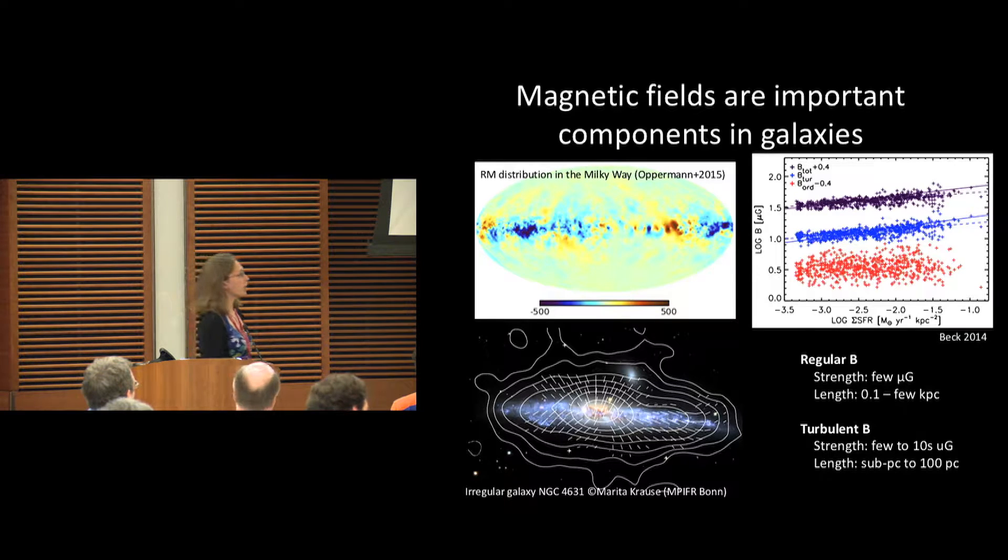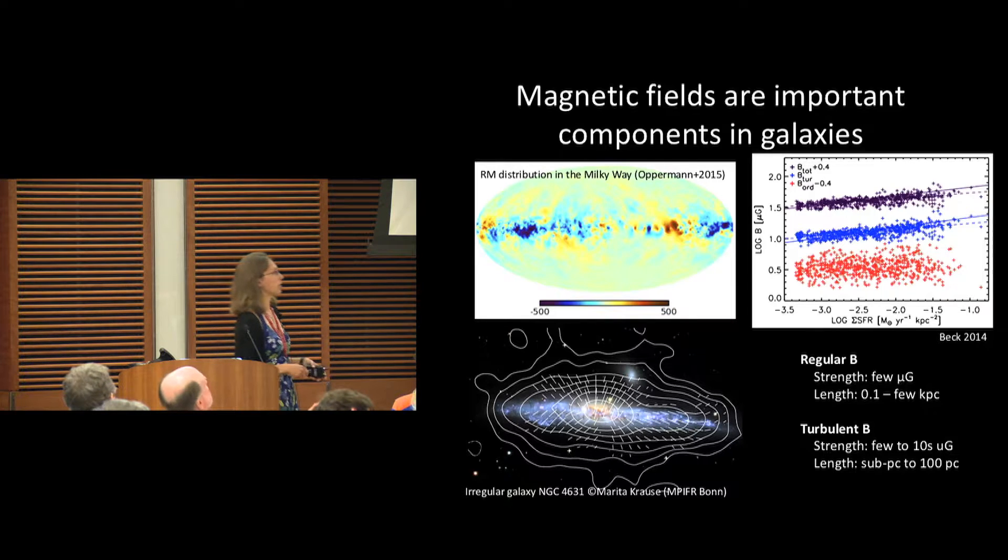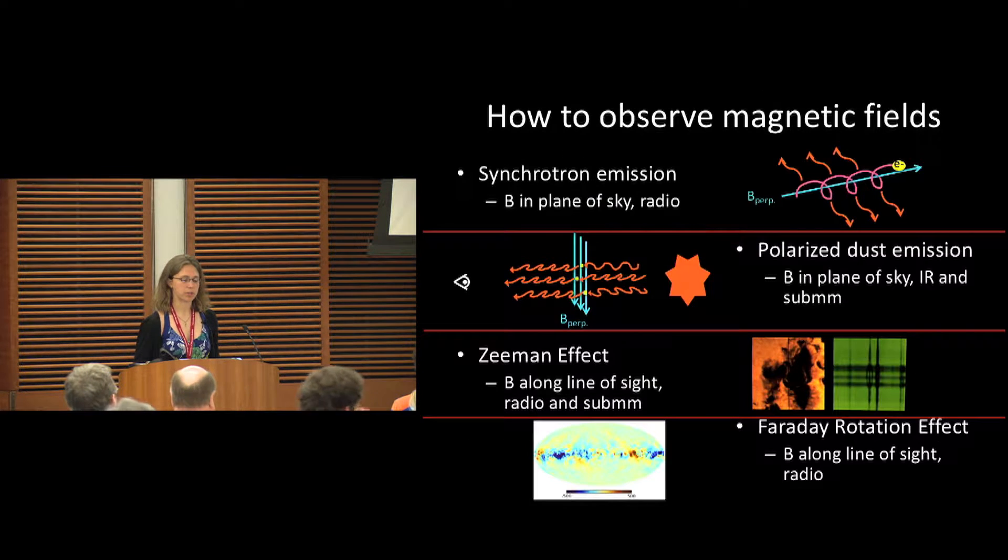When we look at the smaller turbulent scale or turbulent magnetic fields, it can have more energy, stronger, few to tens microgauss in strength, but coherent on much smaller scale lengths from subparsecs to hundreds of parsecs.